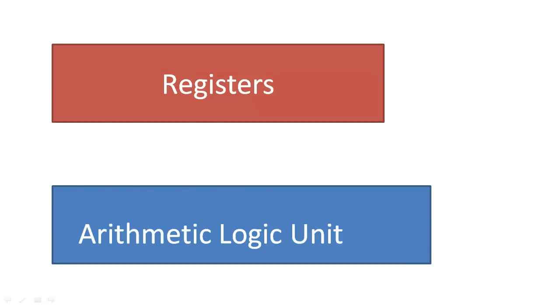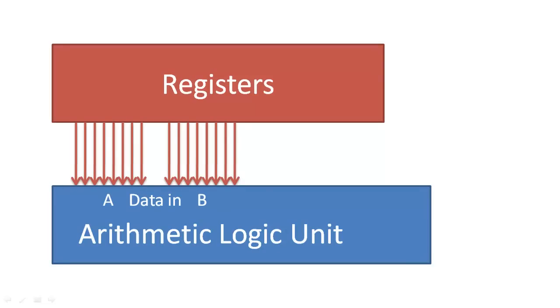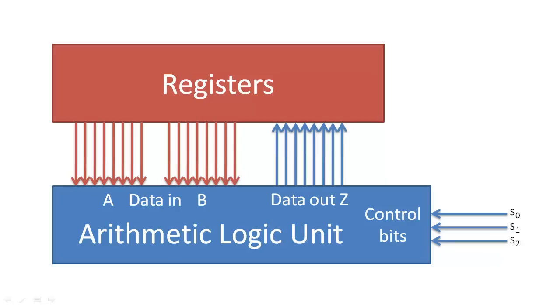The ALU operates by receiving information from the registers, and the control bits indicate what operation to perform on this information. The result of this selected operation is sent back to the registers.